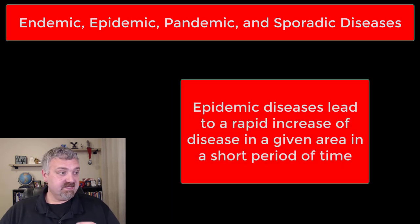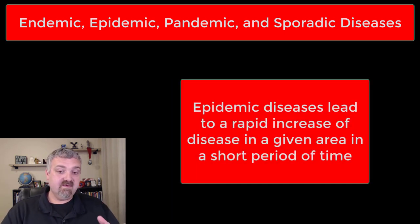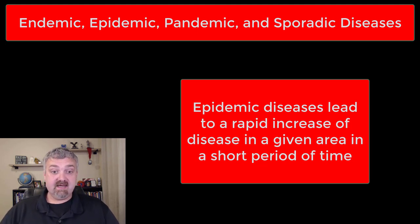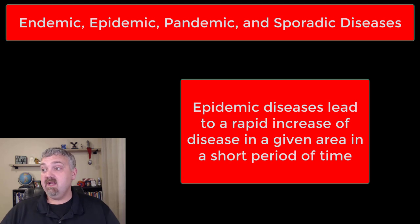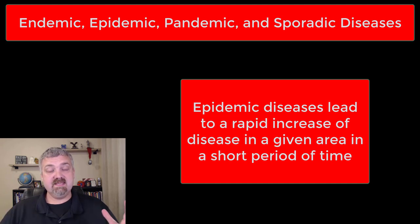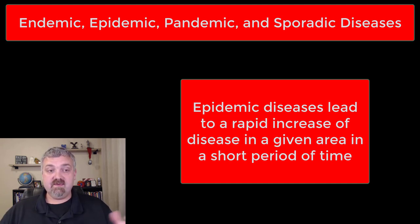Epidemic diseases are diseases that just explode in a given area in a short period of time. It could be a very small area, like a single town having some sort of an outbreak, or it could be a much larger area. These are epidemics — diseases that explode and increase in number or incidence very quickly.